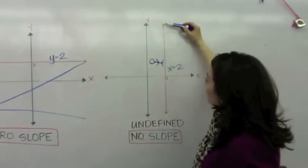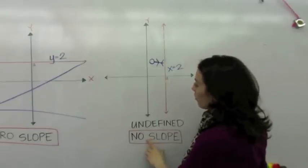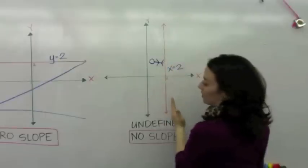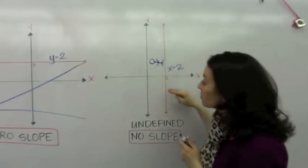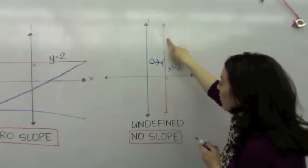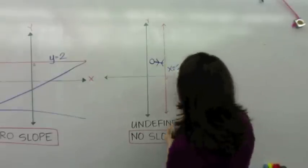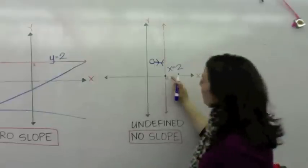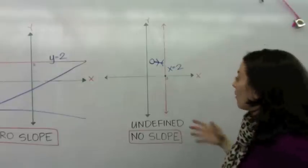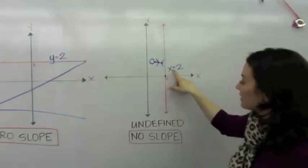When you have a vertical line that has no slope, which axis does it go through? It goes through the x-axis — at 2. And that's why we call this line, when you look at the linear equation, the equation is x equals 2.